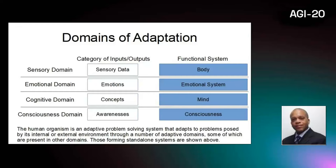Another domain is the emotional system, with emotions as inputs and outputs. Then there is the cognitive system, with concepts as inputs and outputs, and the consciousness, with awarenesses as inputs and outputs.